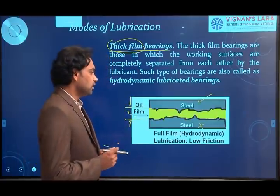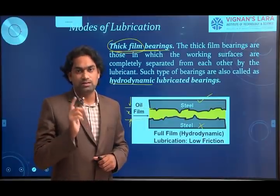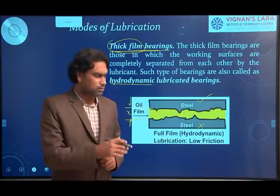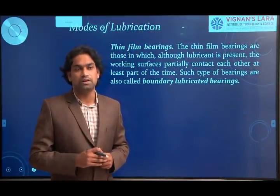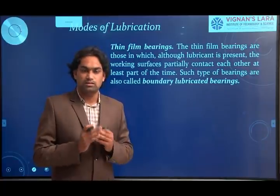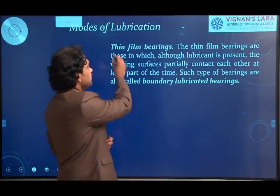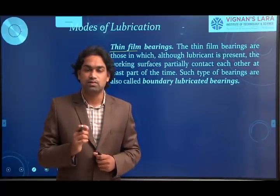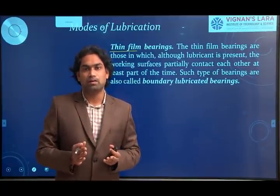There are two methods to obtain the thick film between two surfaces: one is hydrodynamic type and another is hydrostatic type, which we will discuss in a coming class. Coming to the next mode of lubrication — thin film lubrication. In the previous case of thick film, there is no direct metal-to-metal contact and the surfaces are completely separated by a thick layer of lubricant. In thin film lubrication, lubricant is present but the thickness of the lubricating oil does not sustain long enough to separate the two metal components.